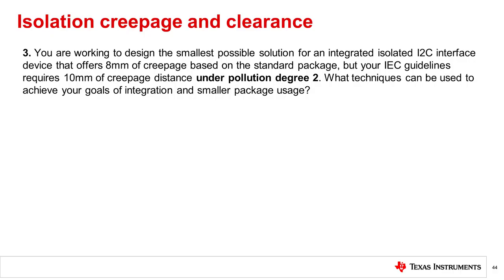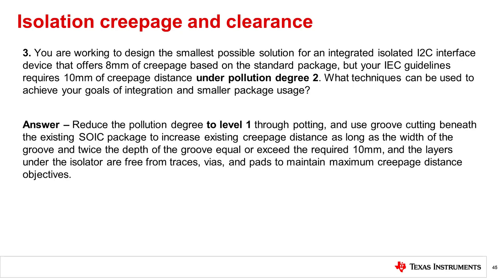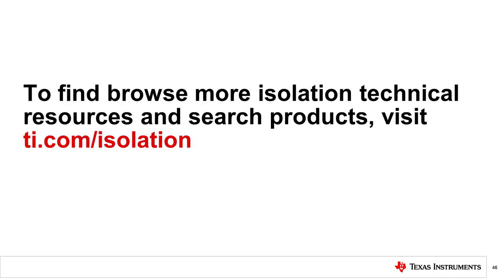You are working to design the smallest possible solution for an integrated isolated I2C interface device. It offers 8 mm of creepage based on the standard package, but your IEC guidelines require 10 mm of creepage distance under pollution degree 2. What techniques can you use to achieve your goals of integration and smaller package usage? You could reduce the pollution degree to level 1 through potting and use groove cutting beneath the existing SOIC package to increase the existing creepage distance. This concludes TI's Precision Labs on Creepage and Clearance. You can browse more isolation topics and resources at www.ti.com/isolation.